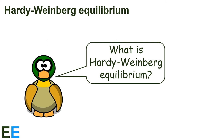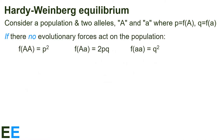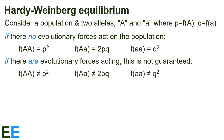So what is Hardy-Weinberg equilibrium? Simply put, it's when no evolutionary forces act on the population. Consider a population with two alleles, capital A and lowercase a, where P equals the frequency of A and Q equals the frequency of a. If there are no evolutionary forces acting on the population, then the frequency of the AA homozygous genotype is P squared, the frequency of the heterozygous genotype is 2PQ, and the frequency of the aa homozygote is Q squared. However, if there are evolutionary forces acting, this correspondence is not guaranteed, and the frequencies of the genotypes may differ from these values.